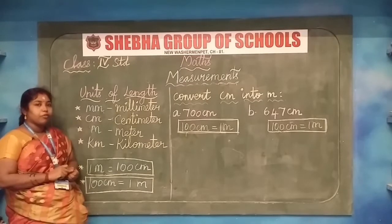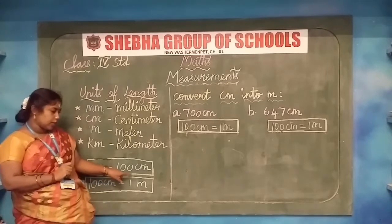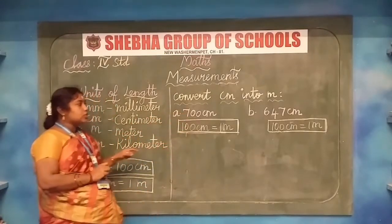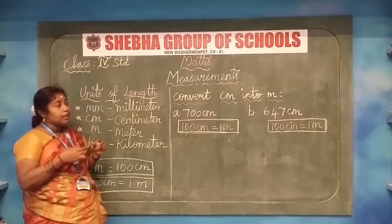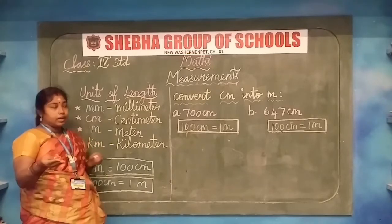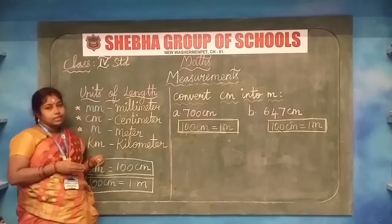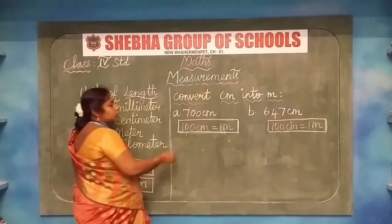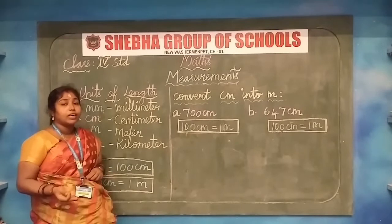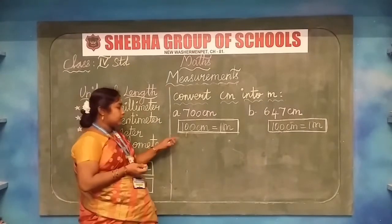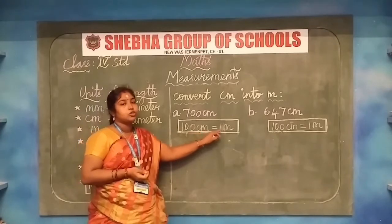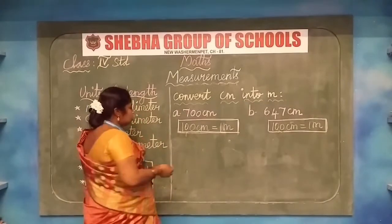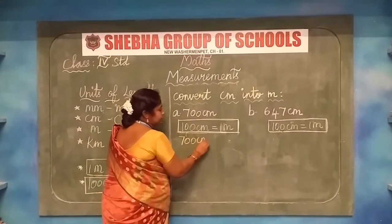I hope everyone understands how to convert meter into centimeter. Now I am going to teach you how to convert centimeter into meter. Centimeter is the smaller unit and meter is the bigger unit. In this conversion we have to divide. Here they have given the number 700 centimeter to convert into meter. The formula is: 100 centimeter equals 1 meter.